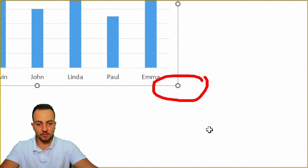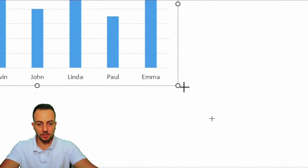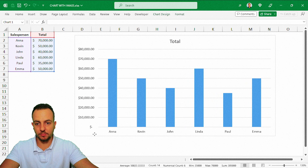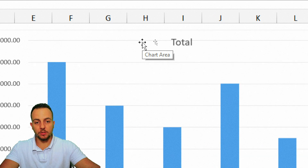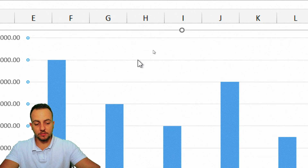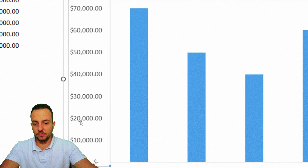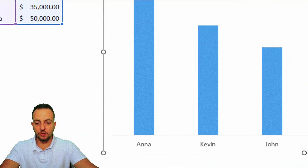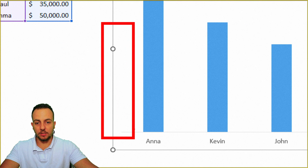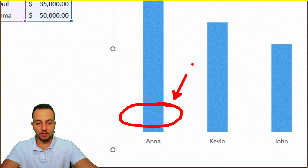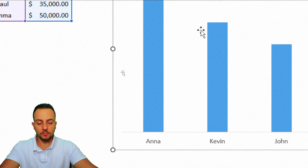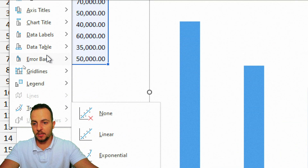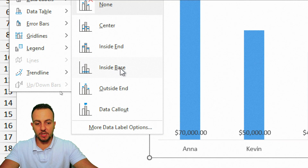I can click the circle handle and increase the chart area to make it bigger. Now I'll click the title and delete it, remove the white gridlines, and delete the axis values on the left. With the chart selected, instead of showing values on the left, I'll add them directly on the columns — click Chart Design, Add Chart Element, then Data Labels, Inside Base.